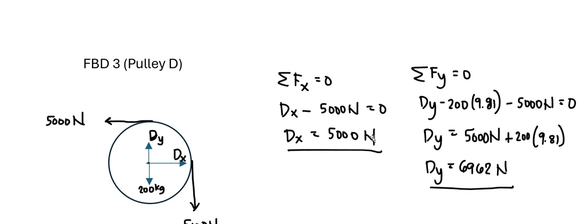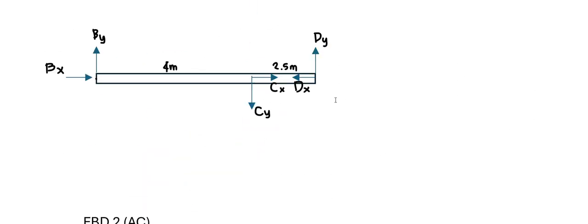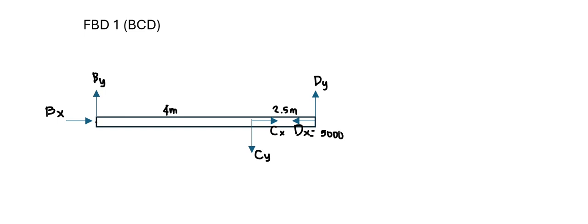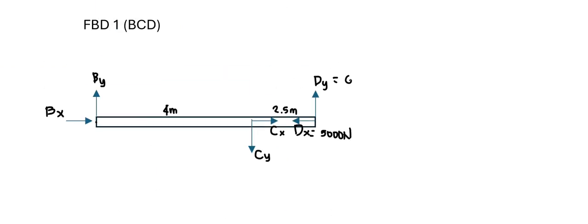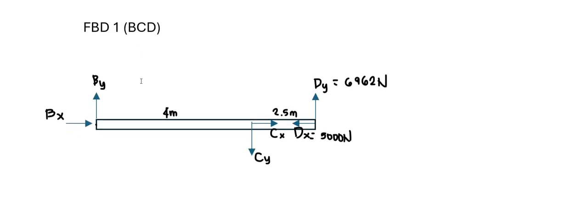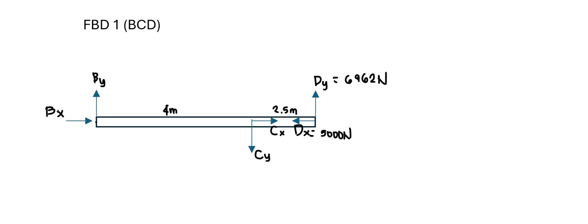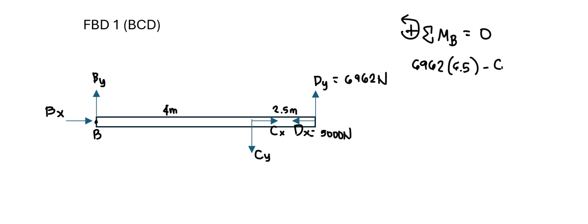Now that we have DX and DY, let's copy these to our other free body diagrams: DX is 5,000 and DY is 6,962. For the BCD free body diagram, notice that if we take moments at point B, the forces BX, BY, and CX cancel because they produce no moment at that point — only CY remains. Therefore, we can solve for CY by taking moments at point B, with counterclockwise positive. DY at 6,962 newtons acts counterclockwise with moment arm 6.5 m; CY acts clockwise with moment arm 4 m.